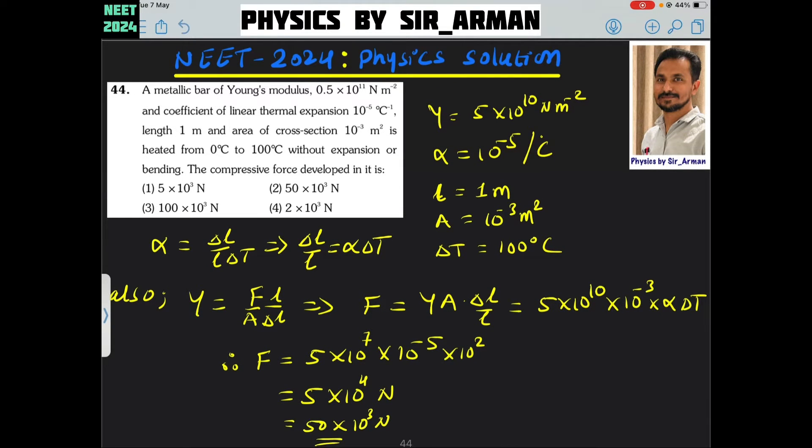Question number 44. A metallic bar of Young's modulus 0.5 into 10 raised to 11, that I can write as 5 into 10 raised to 10, and the coefficient of linear thermal expansion that is alpha 10 raised to minus 5.